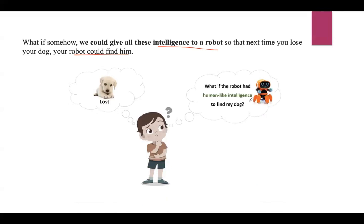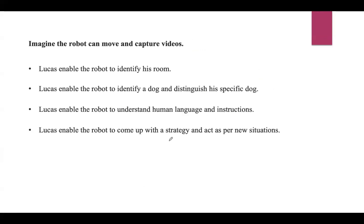What if the robot had human-like intelligence in order to find his lost dog? Imagine the robot can move and capture videos, but that's not enough. In order to find his dog, Lucas needs to enable his robot to think like him and act like him. For that, first Lucas enabled the robot to identify his room — it should be able to recognize the room even if his bed is moved to another wall or the blanket is changed. It needs intelligence to identify the room even with new changes.